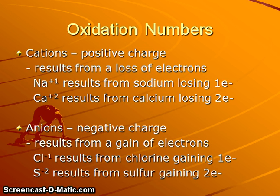Cations are positively charged particles which result from the loss of electrons. Sodium will form a positive one ion by losing one electron. Calcium will form a positive two charged ion by losing two electrons. Anions result in the gain of electrons, therefore they will have negative charges. Chlorine atoms will gain one electron to stabilize them, so they will have a charge of minus one. Sulfide ions have a minus two charge because sulfur atoms gain two electrons, which stabilizes them by filling their S and P sublevels in the highest energy level.